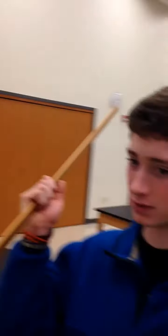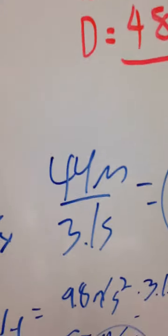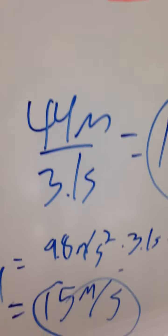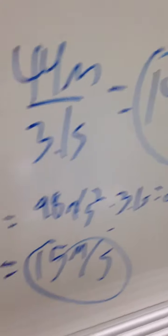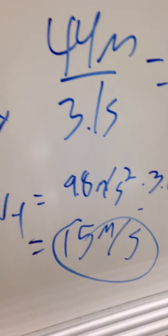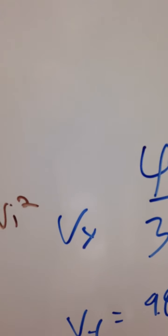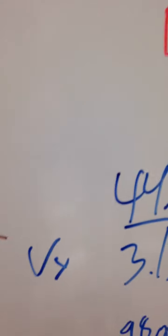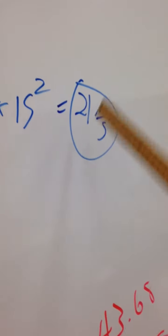The Y component took the acceleration due to gravity times time equals 2 times the Y component of the velocity, which comes out to 15 meters per second. Then, we take the Pythagorean theorem. 14 squared plus 15 squared equals 21 meters per second.